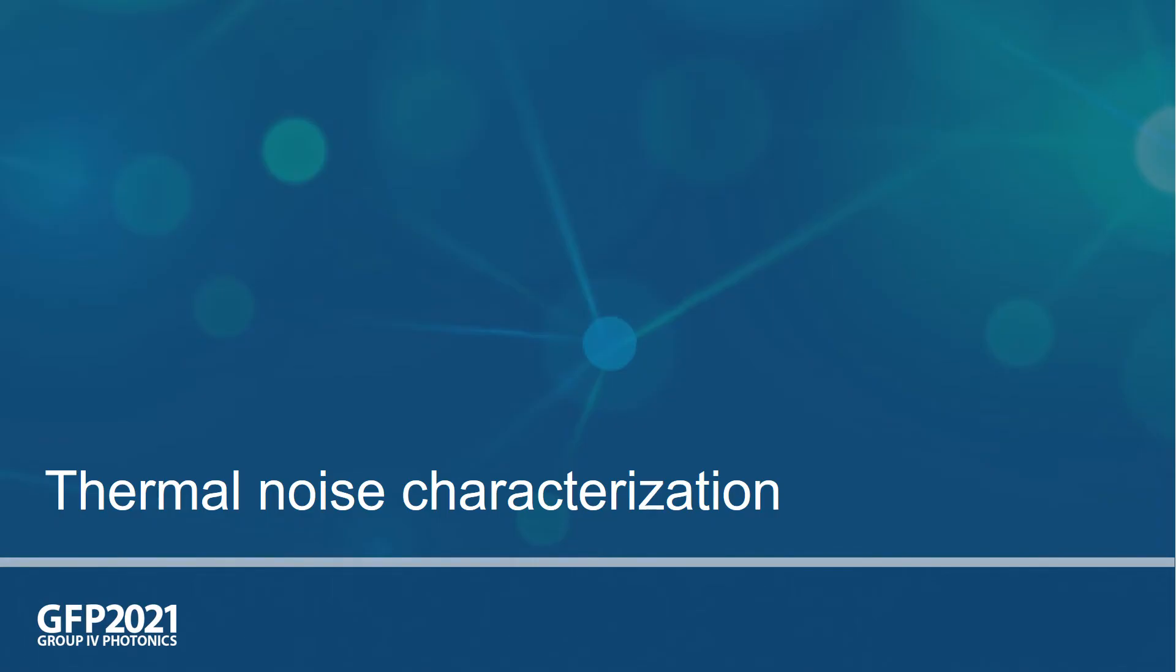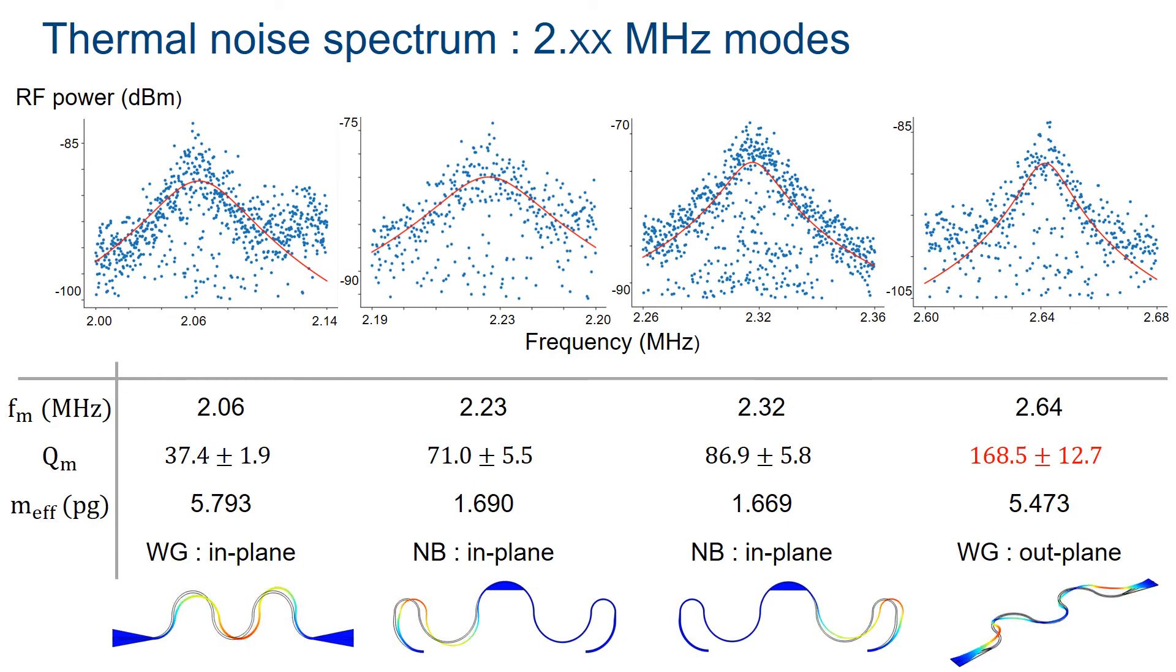The fit is first performed on the thermal noise peaks obtained between 2 and 3 megahertz. Here, four different thermal peaks are observed as shown in the plots. The mechanical frequency, mechanical quality factor as determined from the fits, and the effective mass as simulated on COMSOL are tabulated. At the bottom, the mechanical mode profiles as simulated from COMSOL are shown, where WG represents the waveguide and NB represents the nanobeam. So, we have an in-plane waveguide mode at 2.06 megahertz, an in-plane nanobeam mode at 2.23 and 2.32 megahertz, and an out-of-plane waveguide mode at 2.64 megahertz. A maximum Q factor of 168.5 is observed for the 2.64 megahertz out-of-plane waveguide mode.